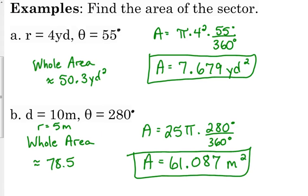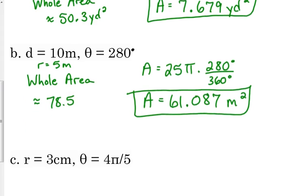Now, in this case, 280 degrees, that's more than three-fourths of your circle. So it makes sense that that number should be closer to the whole area number. One more example.